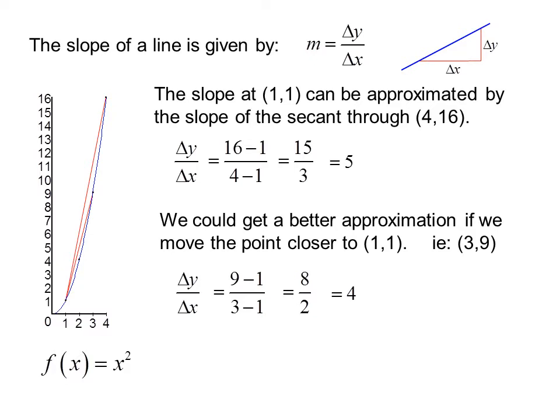Now the slope, delta y over delta x, is (9 minus 1) over (3 minus 1), which is 8 halves or 4. Even better would be the point (2,4).